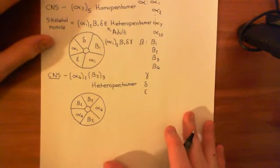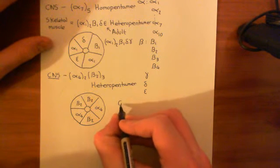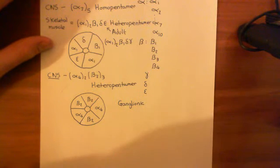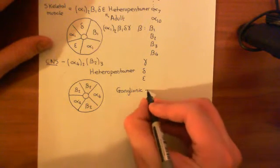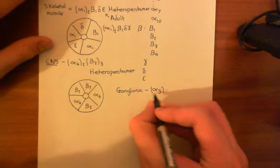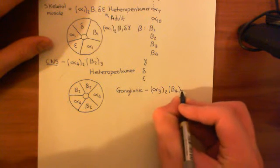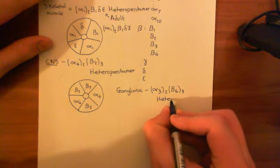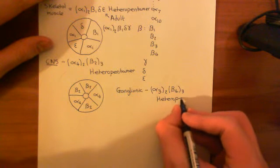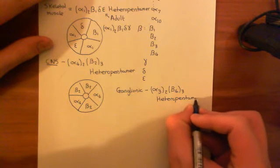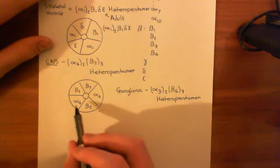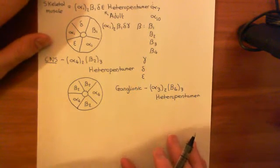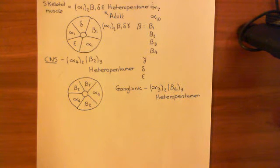The final important example is the ganglionic form, found in postsynaptic neurons of autonomic ganglia: the alpha-3 two, beta-4 three heteropentamer. This has basically the same structure as the CNS alpha-4/beta-2 form — just replace the alpha-4 subunit with the alpha-3 subunit, and the beta-2 subunit with the beta-4 subunit, and you have your ganglionic nicotinic acetylcholine receptor.